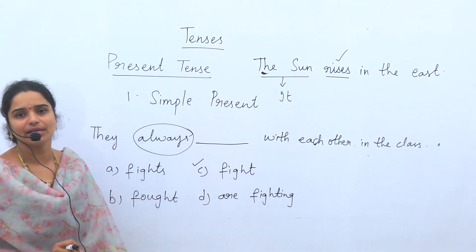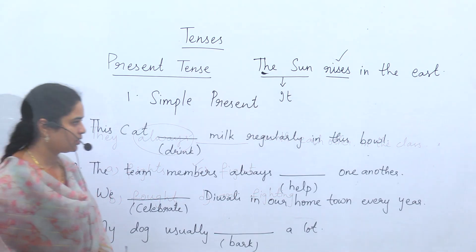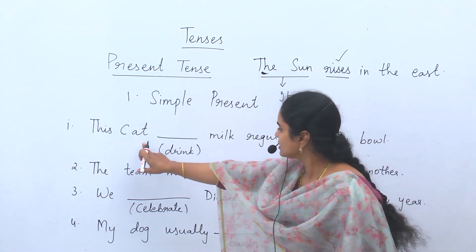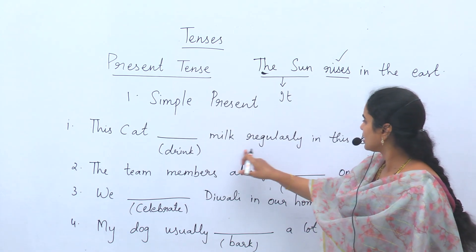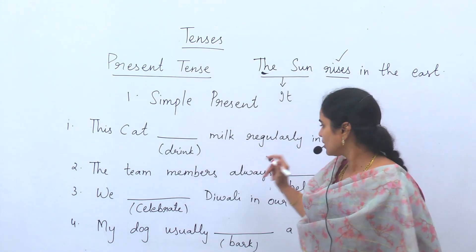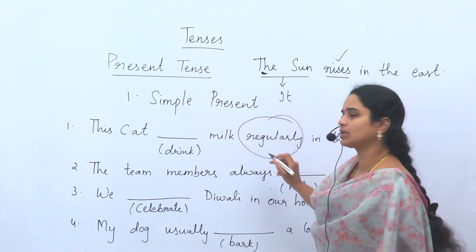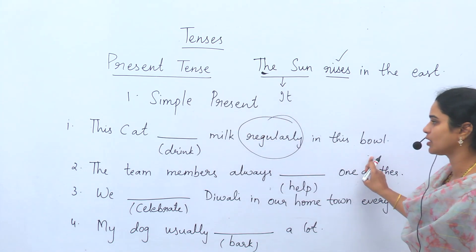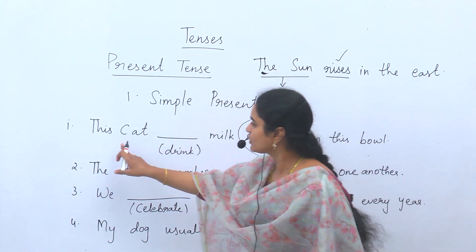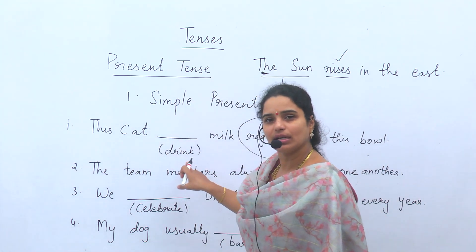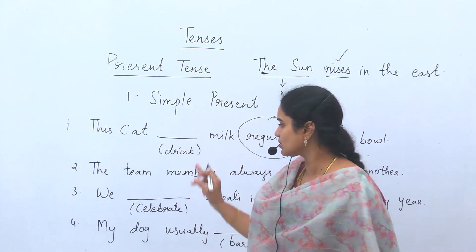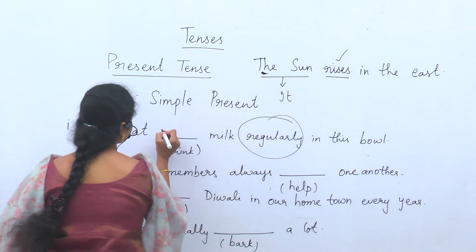Next sentence: 'This cat ___ milk regularly in this bowl.' Now what is the answer? Subject is 'cat'. So cat — drink or drinks? Cat is third person, so drinks. The answer here is 'drinks'.